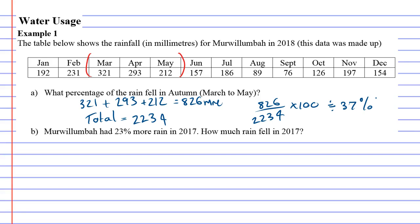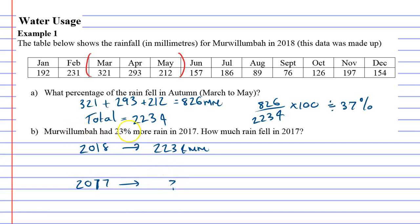Question B: Woolenbar had 23% more rain in 2017 — how much rain fell in 2017? This question looks like a complicated percentage problem, but it's actually straightforward. We know 2018 had 2234 millimeters, and 2017 had 23% more than that. So we calculate 23% of 2234: 23 divided by 100, times 2234.